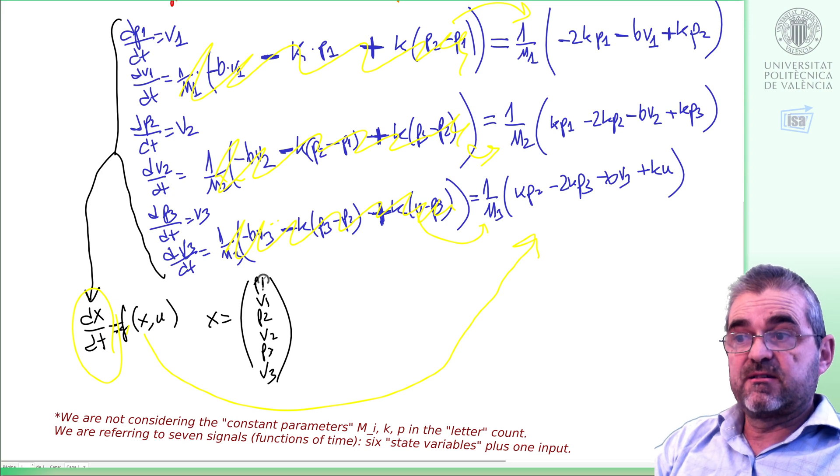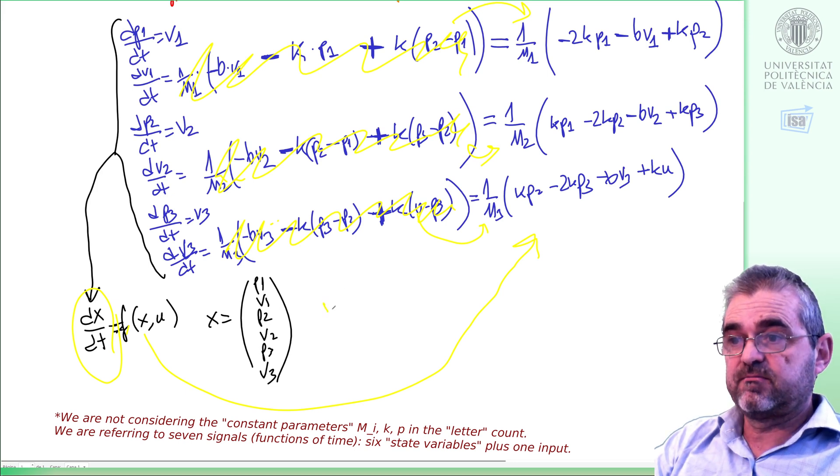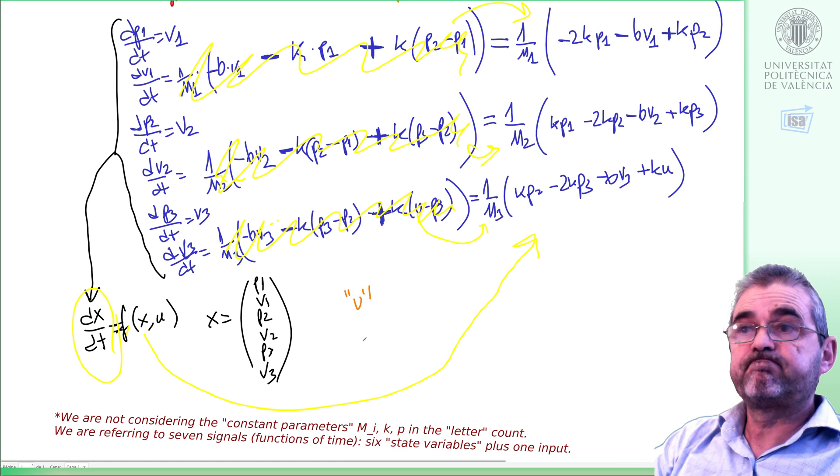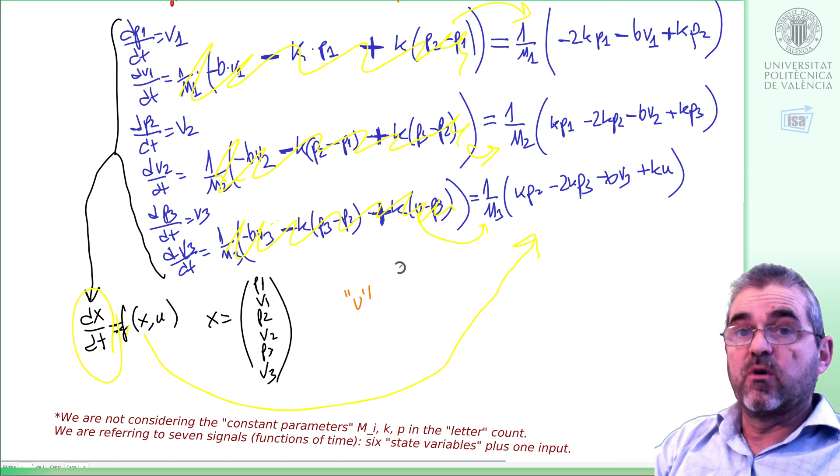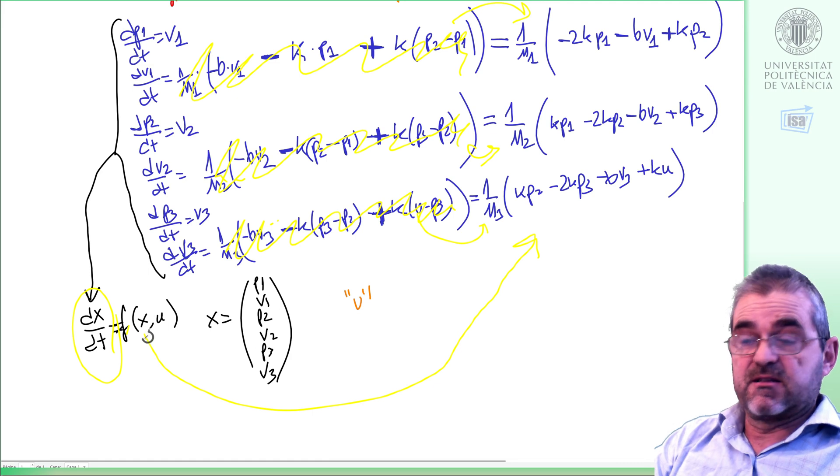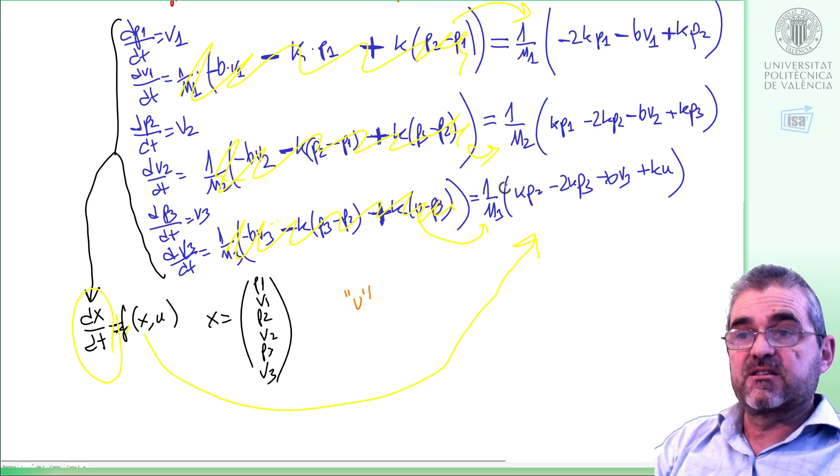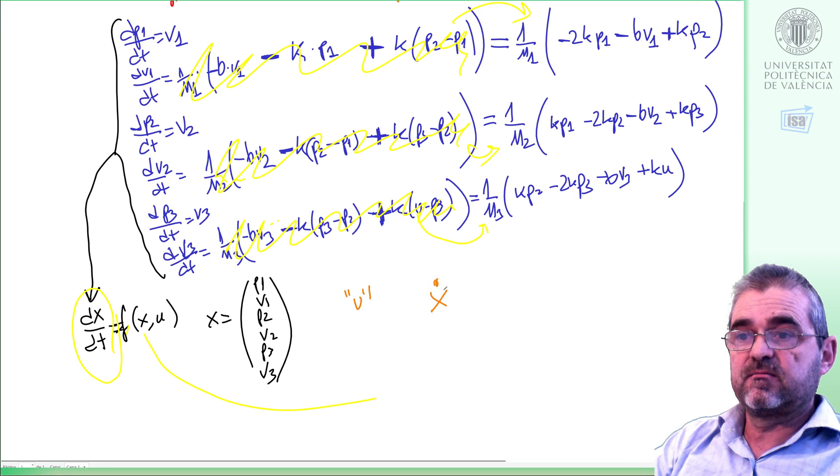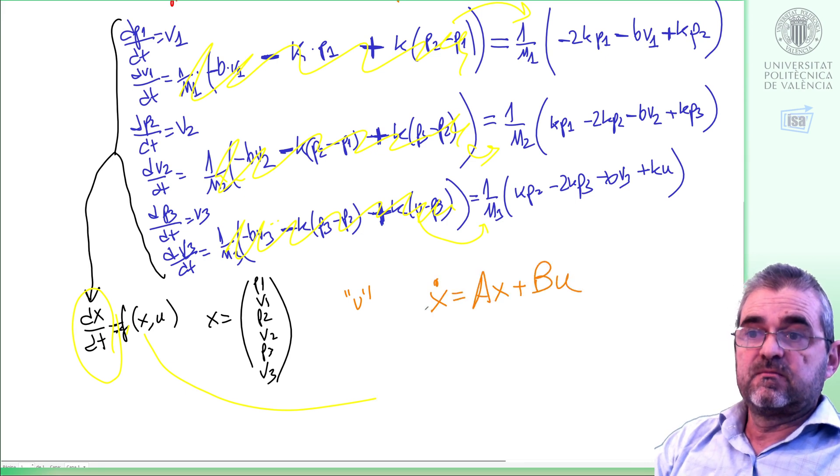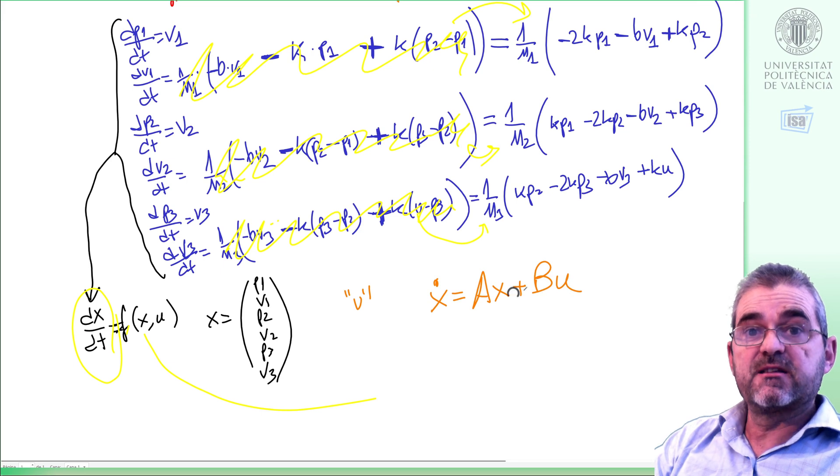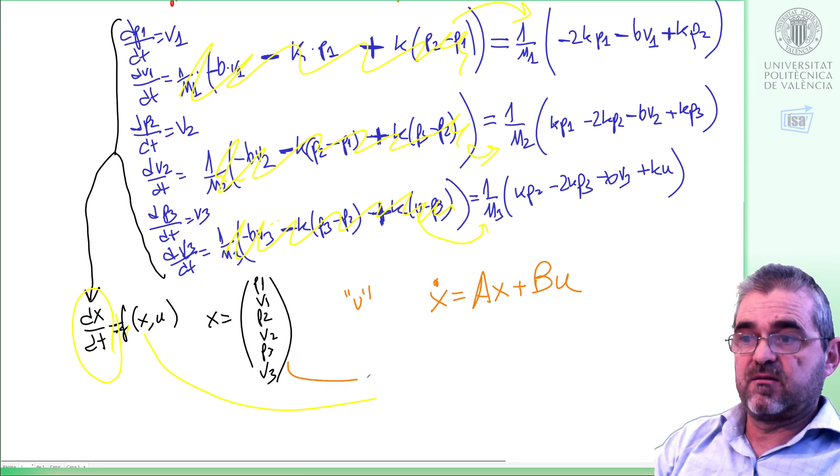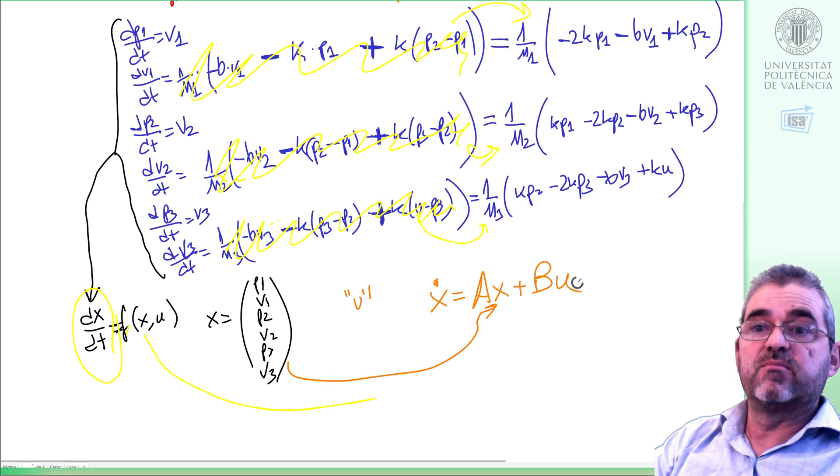So this finishes the modeling. However, this is a state space representation but equations here are linear; only multiplication by constants and summations appear. Then we can actually express this linear equation as a normalized linear state space representation in which I have two constant matrices A and B that multiply states and input.